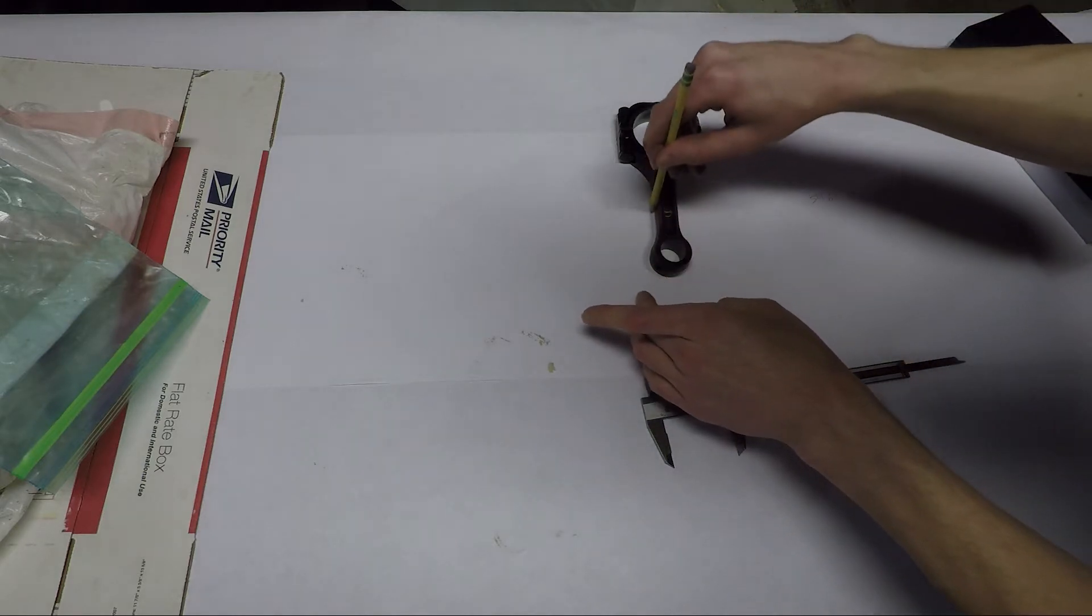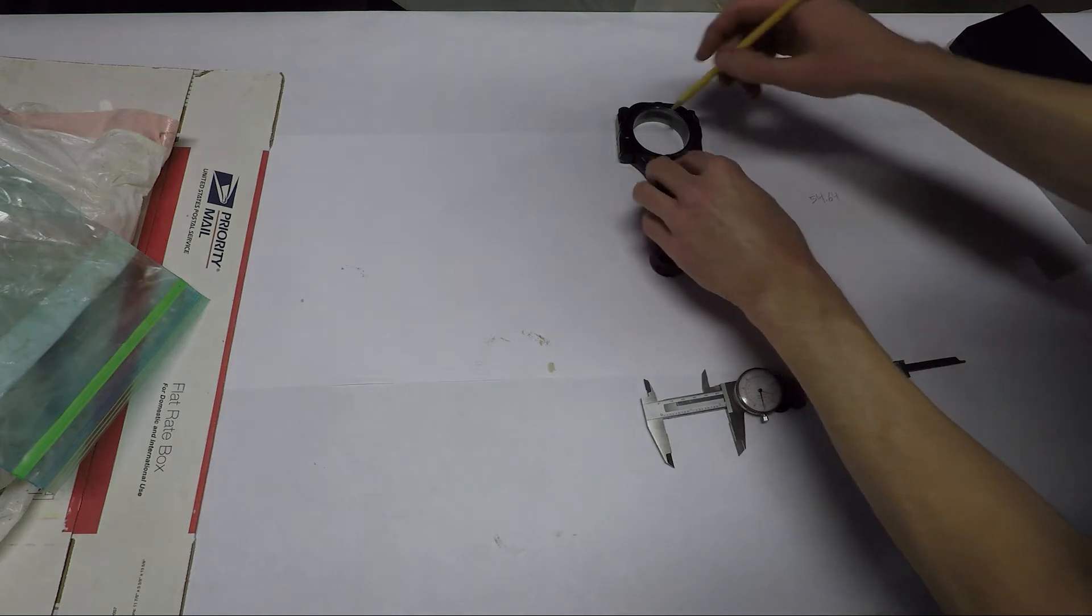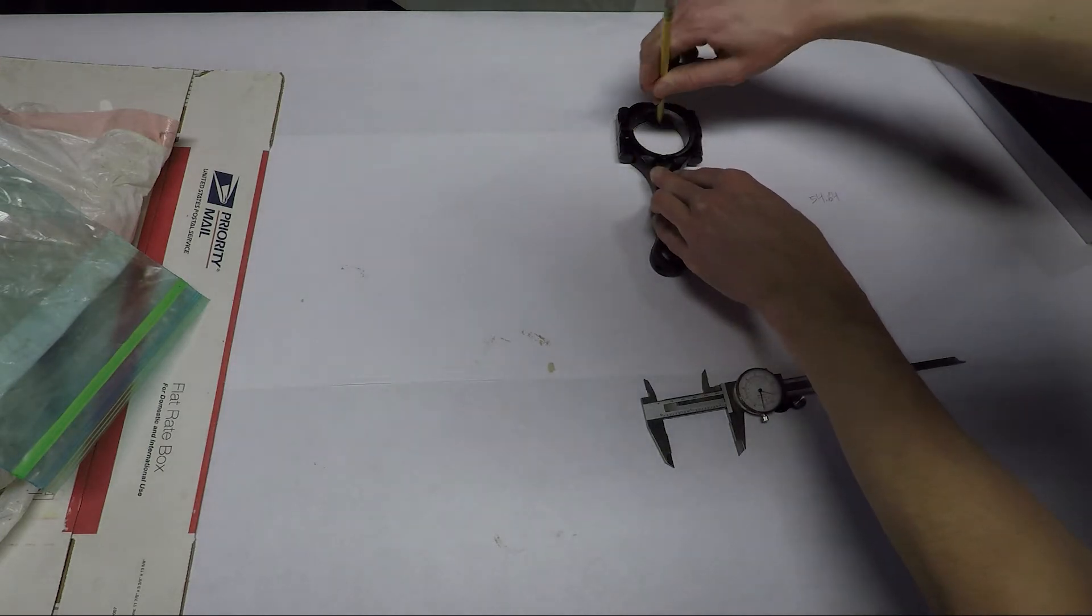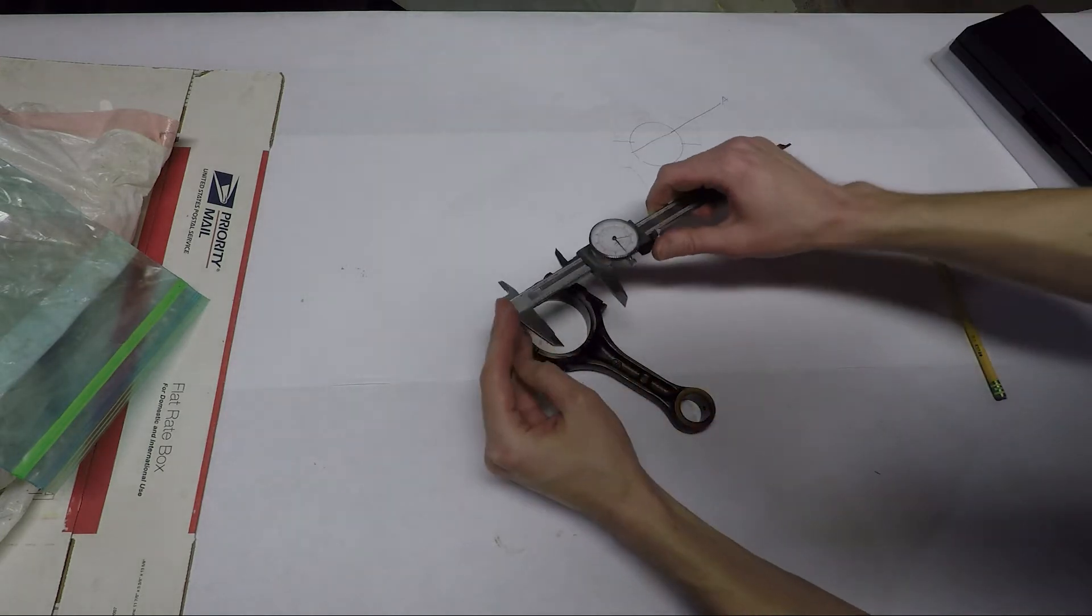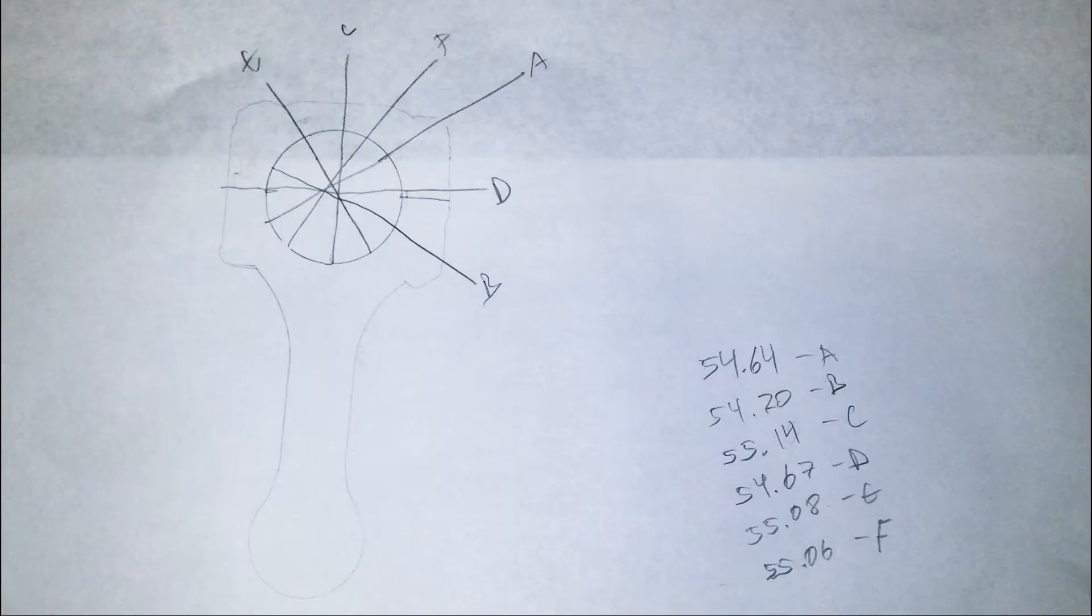I started off by measuring the bad connecting rod. I measured the inside diameter in several locations. In the horizontal diameter, the dimensions were pretty close together. I think this B measurement was a little fluke, I should have tried it again just to make sure.